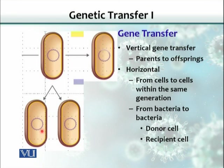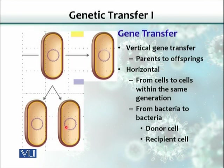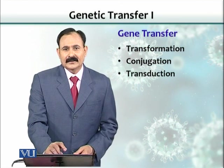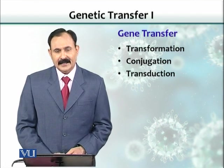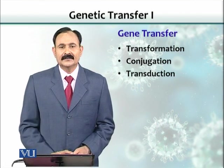If genes are transferred within the same generation — in other words, within the offspring — this phenomenon is called horizontal or lateral gene transfer. There would be a donor and a recipient; one gene is transferred from one bacterial cell to another bacterial cell of the same generation. These are not in a parent-offspring relationship. This is called lateral or horizontal gene transfer, and it has three mechanisms: transformation, conjugation, and transduction.